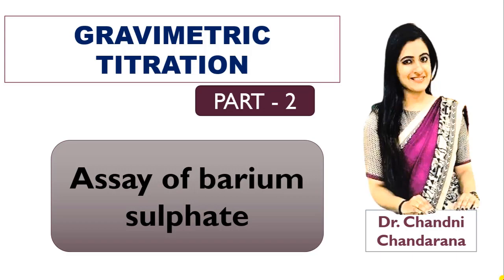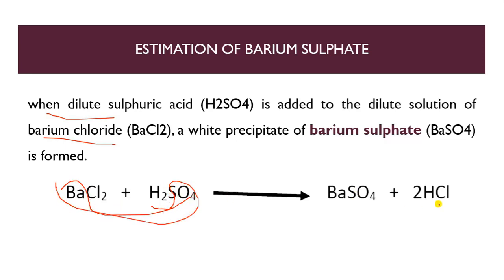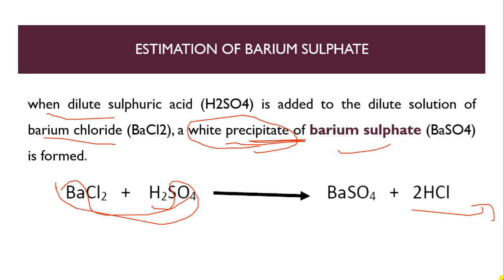In this video, we will see the reaction for barium sulfate, the procedure, how to perform the assay, and the calculations. For estimation of barium sulfate, the basic principle is: when dilute sulfuric acid is added to a dilute solution of barium chloride, we get BaSO₄ and HCl is released. We get a white precipitate as the end point — a white precipitate of barium sulfate.